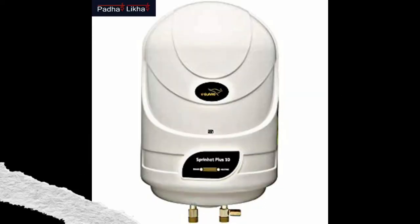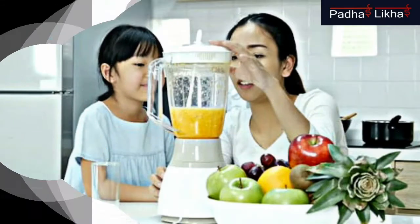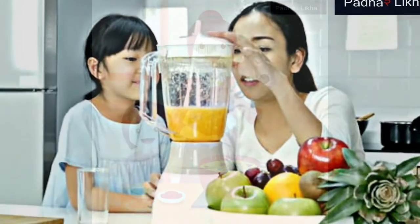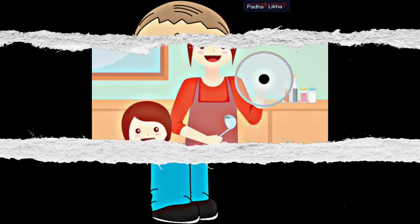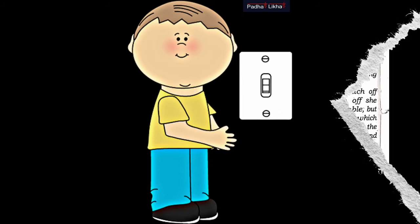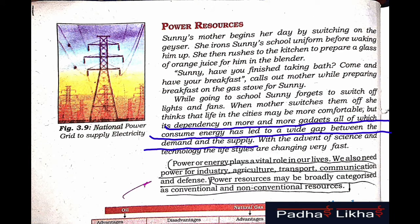Sunny's mother began her day by switching on the geyser. She irons Sunny's school uniform and then rushes to the kitchen to make orange juice in the blender. Then she prepares breakfast for him. While going to school, Sunny forgets to switch off the lights and fan. When his mother switches them off, she thinks that dependency on more and more gadgets which consume energy has led to a wide gap between the demand of Power Resources and its supply.